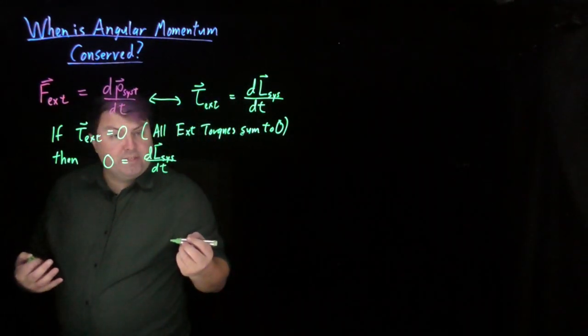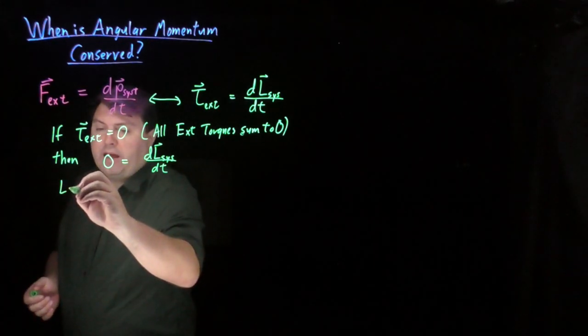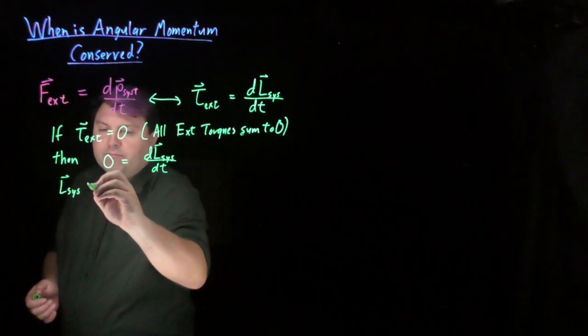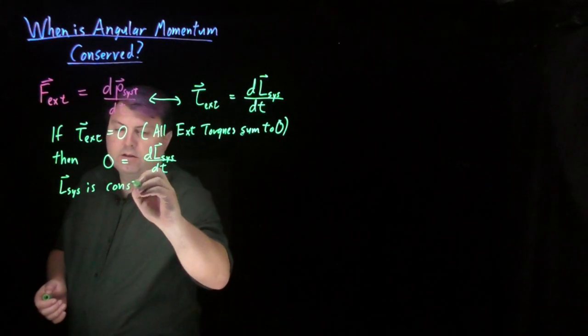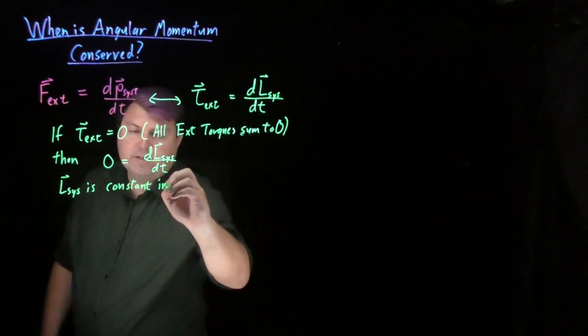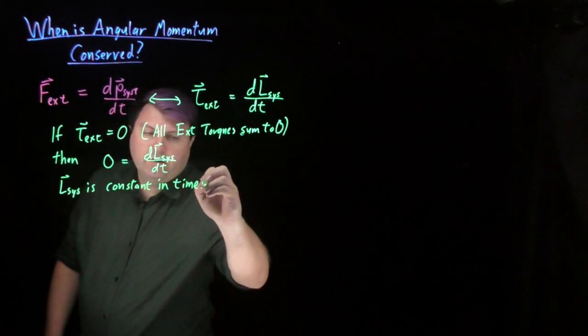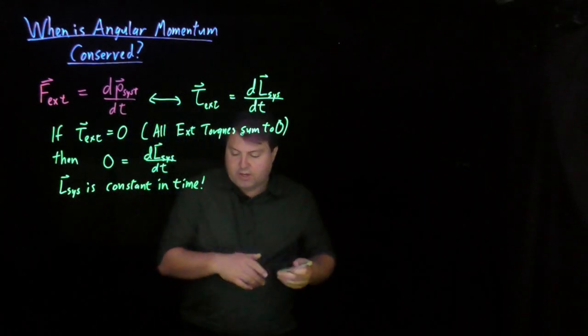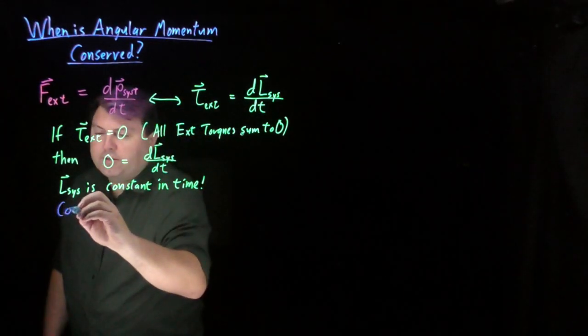And if the derivative is equal to zero, then we're saying that the angular momentum of our system is constant in time. So this is our conservation of angular momentum.